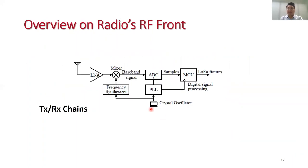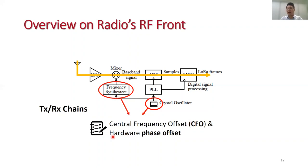To understand the impact of radio hardware, we need to look into the TX and RX chains. Here, we focus on the RX side. Basically, when a signal is received by a radio, it will go through many RF components, such as the antenna, the mixer, and the ADC components. During this process, the frequency components will introduce CFO and the hardware phase offsets, and the ADC components will introduce sampling timing offset.